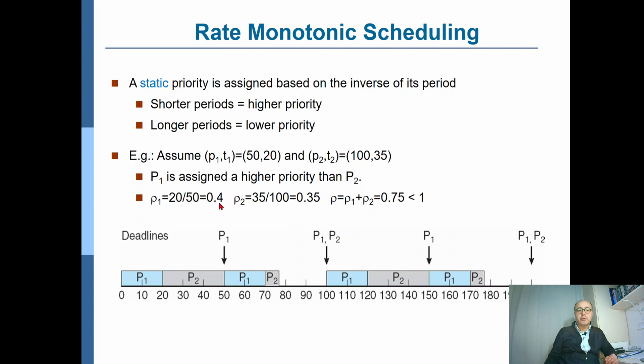Therefore, it would have 40% CPU utilization, whereas P2 would have 35% CPU utilization. Well, if you look at the overall CPU utilization, then it would be 75%, which is less than 100%. So it seems reasonable.